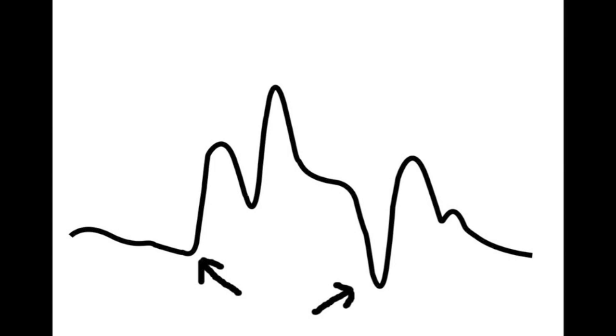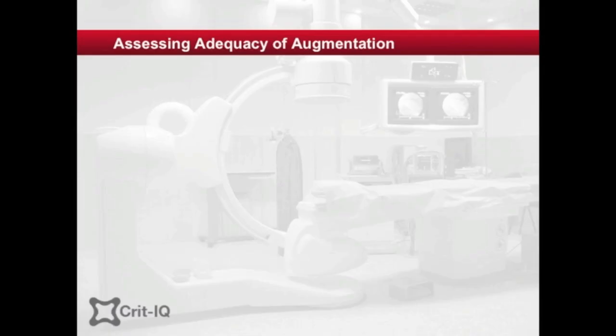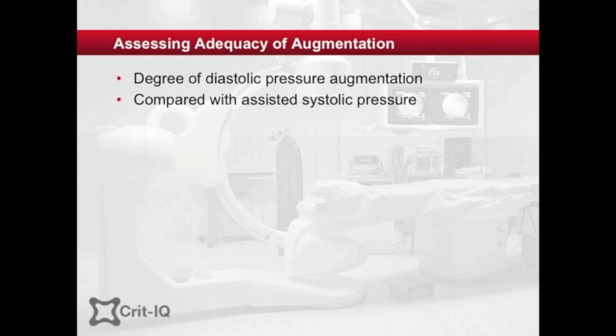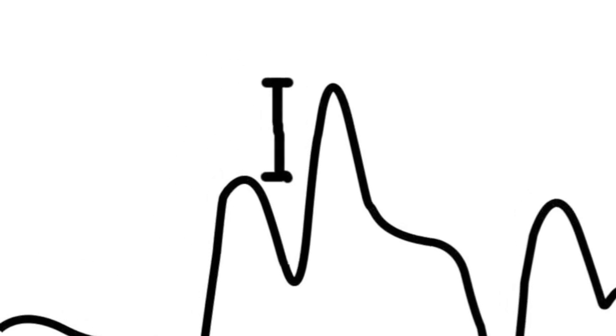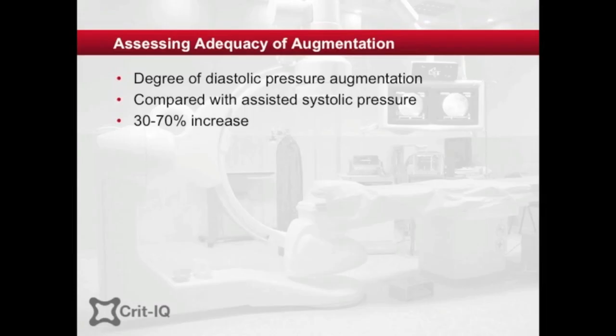This represents a reduction in afterload and cardiac work. The adequacy of augmentation can be measured by a number of factors, including the degree of increase in the diastolic augmented pressure from the assisted systolic pressure. In general, there should be a 30 to 70% increase in the augmented diastolic pressure compared to the assisted systolic pressure. However, diastolic augmentation must not be assessed in isolation as it is influenced by many factors, including the position, size, and volume of the balloon, the circulating blood volume, left ventricular dysfunction, medications, and improvement in hemodynamics and left ventricular function. These factors all reduce the diastolic augmentation in relation to the systolic pressure. The earlier examples may require intervention, while the latter example is evidence that the patient is improving.